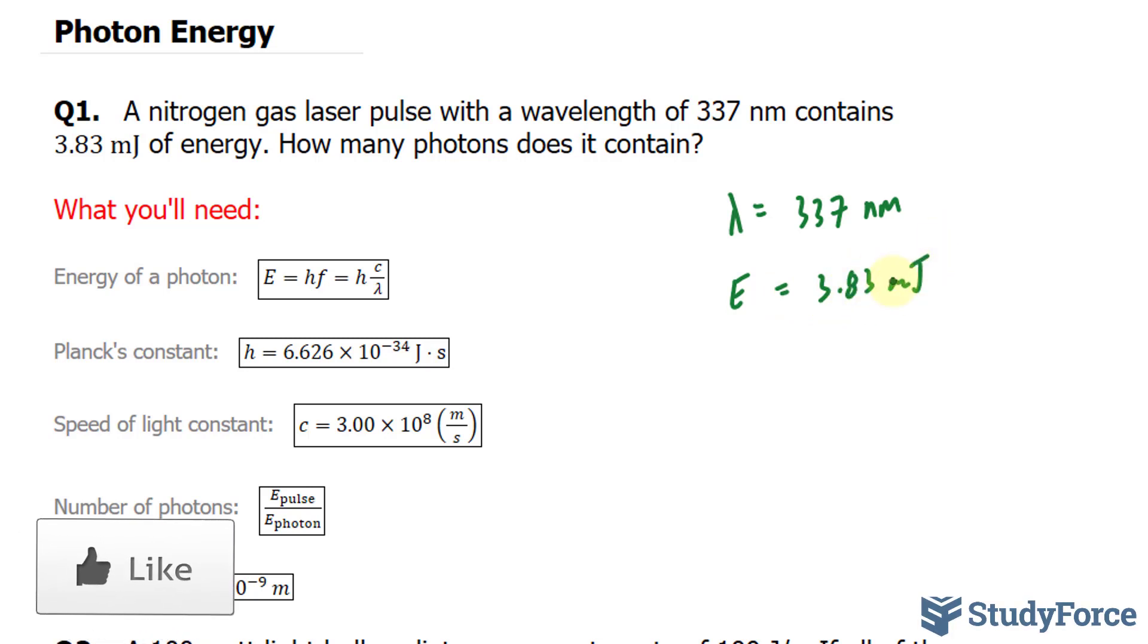The formula that relates energy and wavelength is the energy of a photon formula, which is energy is equal to H, that's Planck's constant, times the frequency. And if you recall in the previous video, frequency is defined as the speed of light over the wavelength. So if we combine those two ideas, we end up with the formula E is equal to H and F can be replaced with C over lambda.